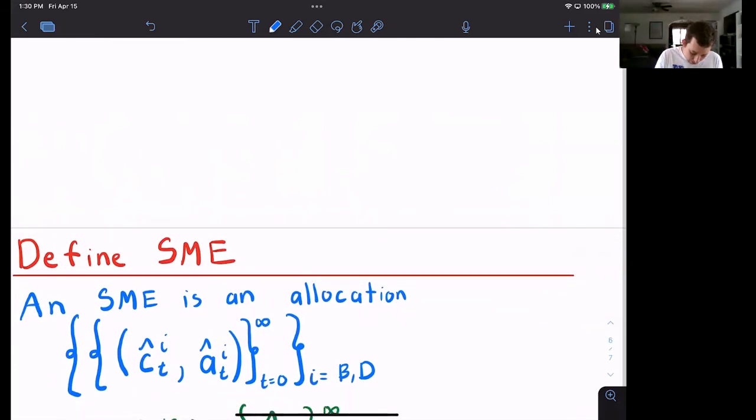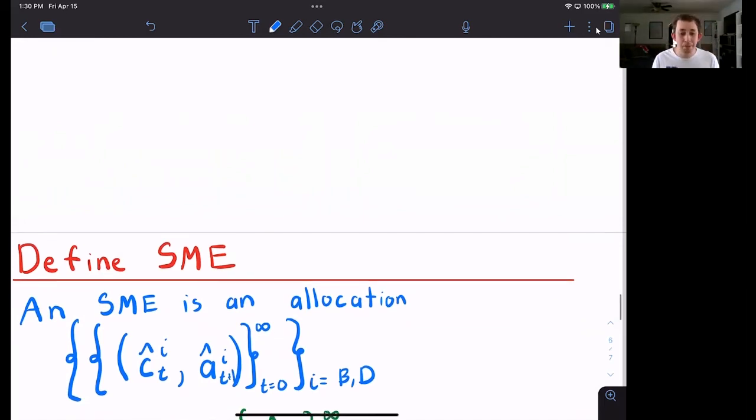A sequential markets equilibrium is an allocation where each person is allocated a consumption and also assets from t equals zero to infinity. Sometimes you could put this plus one if you would like. Either one is fine for each person.